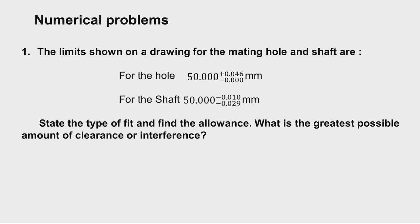The limits shown on a drawing for the mating hole and shaft are given. For the hole, the basic size is 50mm and the limits are shown. For the shaft, the basic size is also 50mm with an upper limit and lower limit. We have to find the allowance, state the type of fit, and calculate the greatest possible amount of clearance or interference.